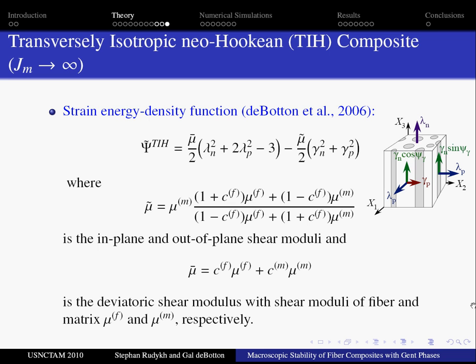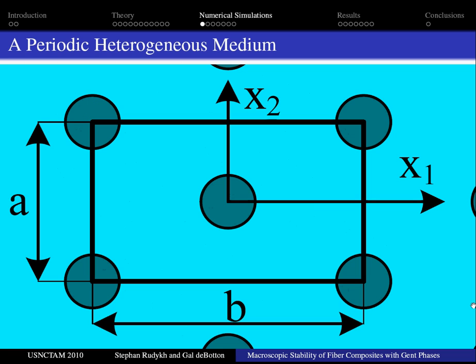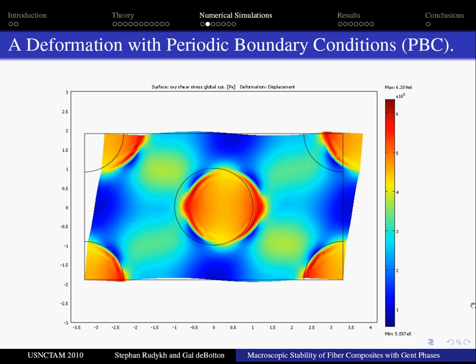Next we are turning to the numerical simulations. In many cases the material can be assumed to be periodic. Then the problem can be treated by investigating a unit cell using periodic boundary conditions. These conditions connect variables on the opposite sides. An example of the deformation with this type of boundary conditions is presented.